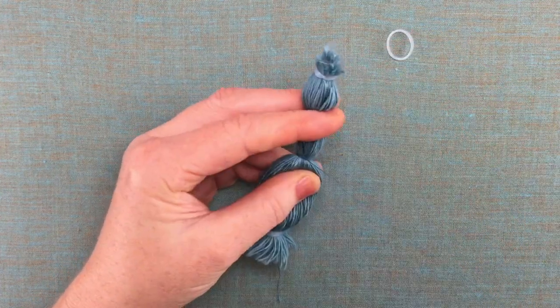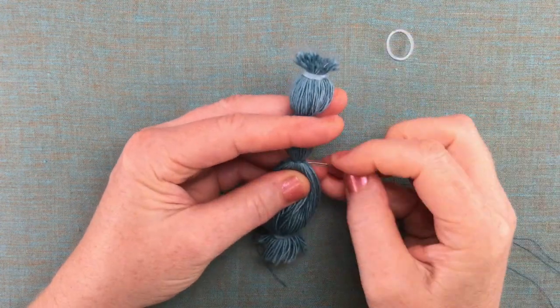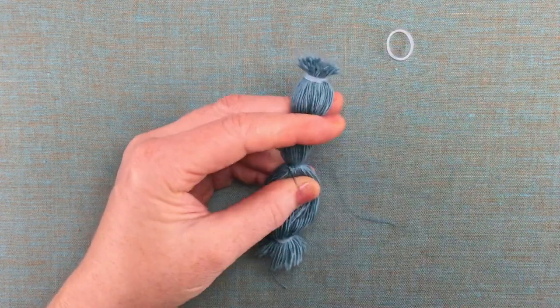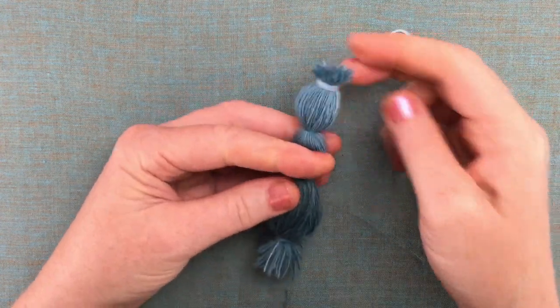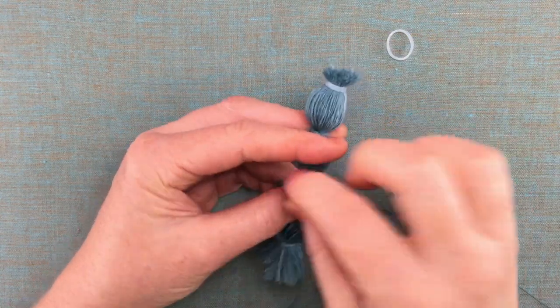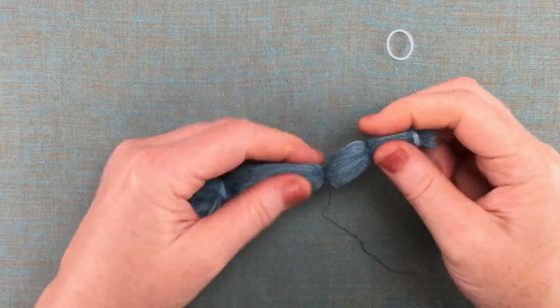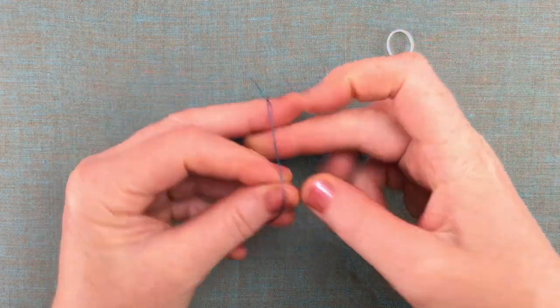The other reason I like to use embroidery thread rather than yarn to bind my pom-poms is that the smaller the center binding is, the less visible the center seam is where we've connected our fibers, which is particularly important for small pom-poms.